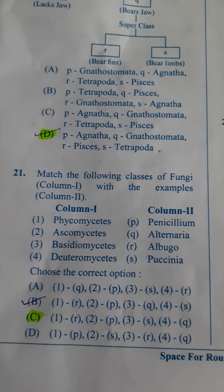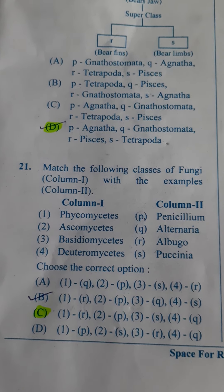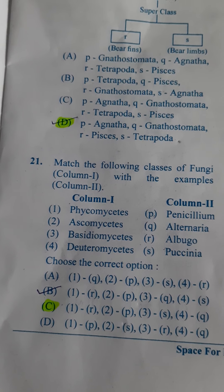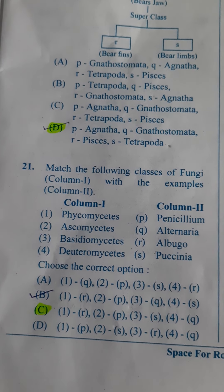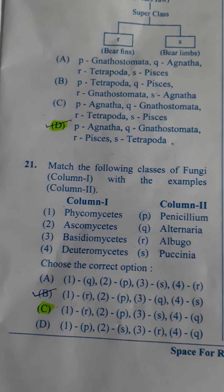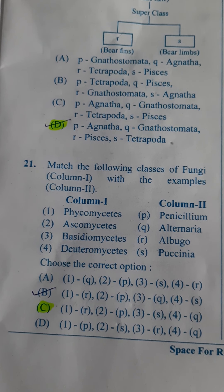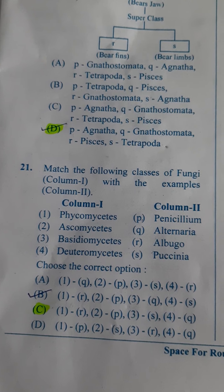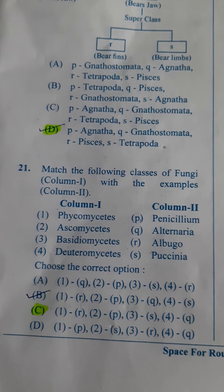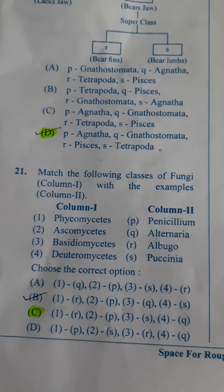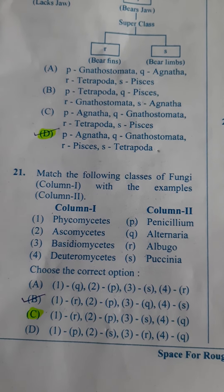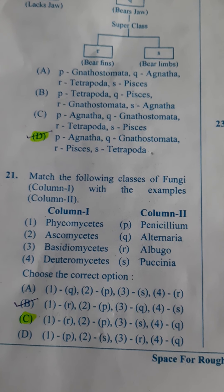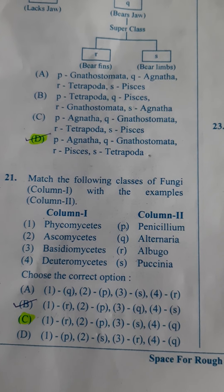Next question: Match the following classes of fungi with the examples. Phycomycetes — example is Albugo; Ascomycetes — example is Penicillium; Basidiomycetes — example is Alternaria; and Deuteromycetes — example is Paxillus. So the answer here is B.